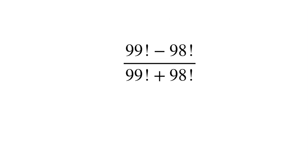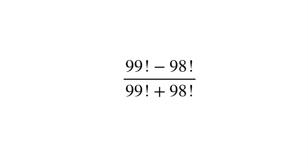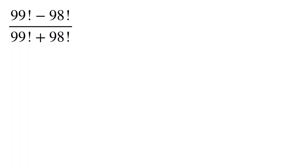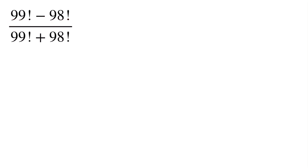Hello everyone, welcome back. This is our question — can you solve this? If you can, pause the video and give it a try. Otherwise, let's see the solution. The question is: 99 factorial minus 98 factorial, divided by 99 factorial plus 98 factorial. We have to find the value of this.